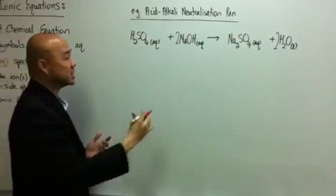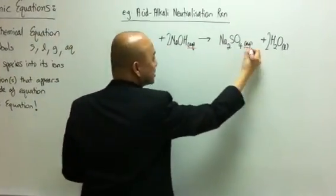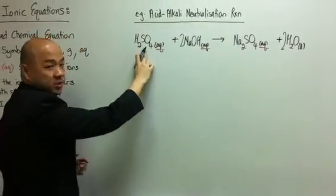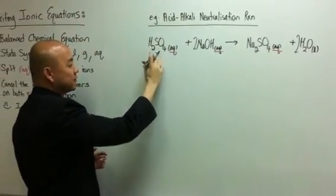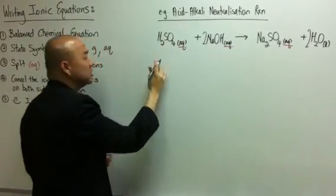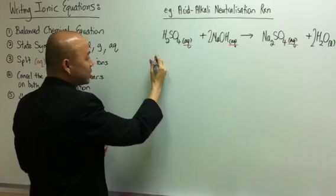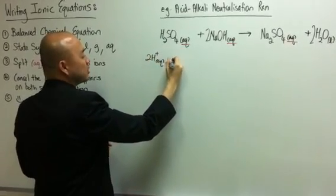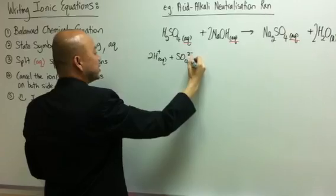We need to choose all the aqueous species and we need to split them up into its ions. For the first one, you need to be careful for sulfuric acid. There are actually two hydrogen atoms here. So when it becomes the ions, when you split them up, they will have 2H+ over here, and of course, you have your sulfate anion.